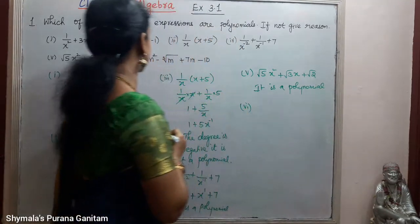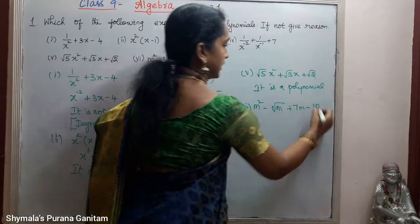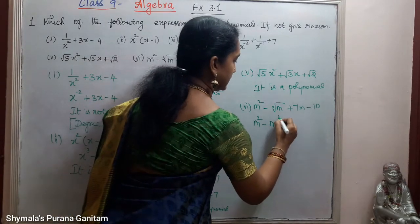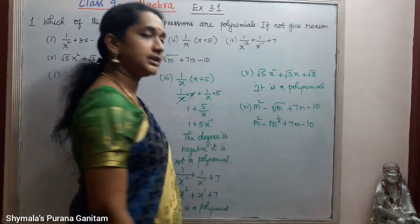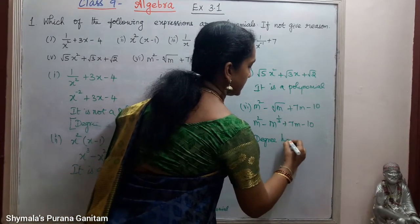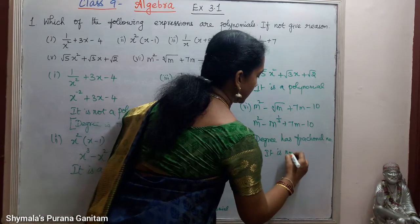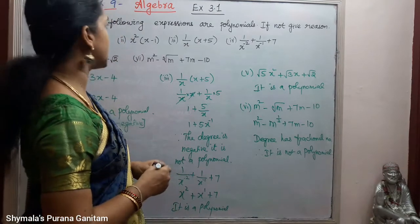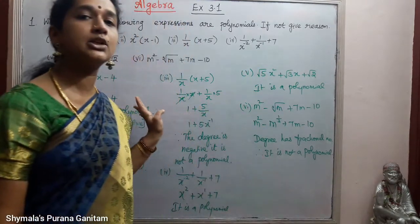The sixth one is m² − ∛m + 7m − 10. Here, ∛m can be written as m^(1/3). The degree here is 1/3, which is a fraction. Since the degree has a fractional value, it is not a polynomial. We were asked to check whether the given expressions are polynomials, and if not, give the reason — which we have done.